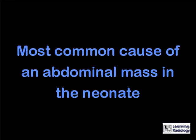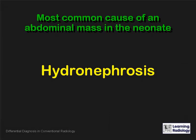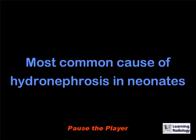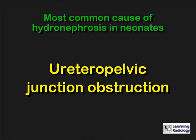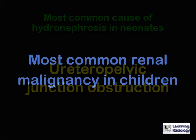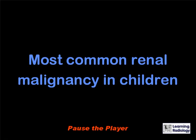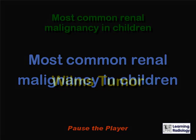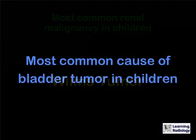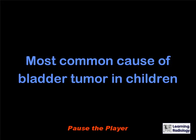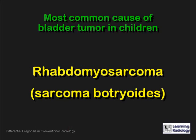What is the most common cause of an abdominal mass in the neonate? Hydronephrosis. What is the most common cause of hydronephrosis in neonates? Ureteropelvic junction obstruction. What is the most common renal malignancy in children? A Wilms tumor. What is the most common cause of a bladder tumor in children? A rhabdomyosarcoma.